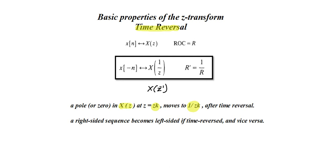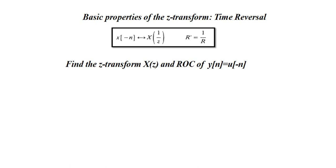Now we will see how to apply this time reversal property to solve a problem. The given signal is u(-n). We define a known signal X(n) = u(n), and the Z-transform of this signal is Z/(Z-1). It is a causal signal and the ROC is modulus of Z greater than 1.